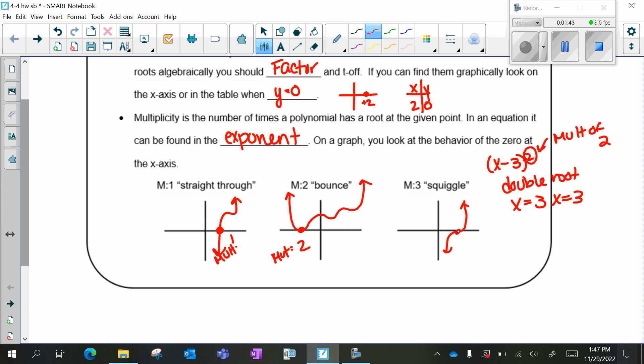So it does cross over the x-axis but it squiggles. If I were to continue, for example, a multiplicity of 4 would flatten and go back up. Even multiplicities are tangent to the x-axis and odd multiplicities cross over the x-axis.